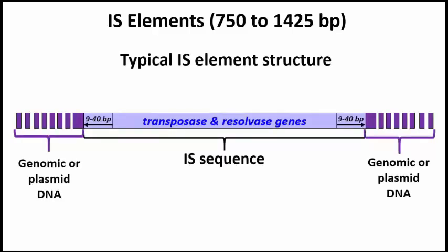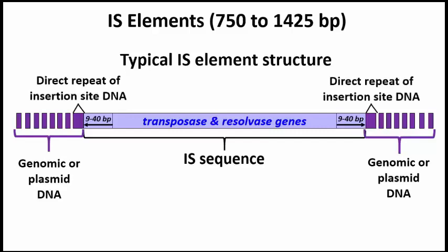Let's look at the structure of a typical IS element. They range in length from about 750 to a little more than 1400 base pairs. They contain transposase and resolvase genes, which code for enzymes necessary for mobility. At either end of the IS element are inverted repeats, which are part of the IS element structure and are also essential for mobility. Genetically engineered elements that lack or have mutated inverted repeats cannot transpose. Wherever they insert, IS elements are also flanked by direct repeats. These are not part of the element itself, but are footprints of insertion in the target DNA — either genomic DNA or plasmid DNA — and result from the mechanism of transposition.